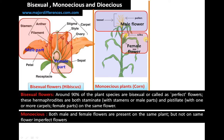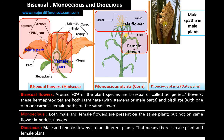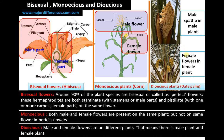The next case is dioecious, where male and female flowers are on different plants. That means there is a male plant with male flowers and a female plant with female flowers. For example, the date palm — this is the male flower on the male plant, and this is the female flower on the female plant.